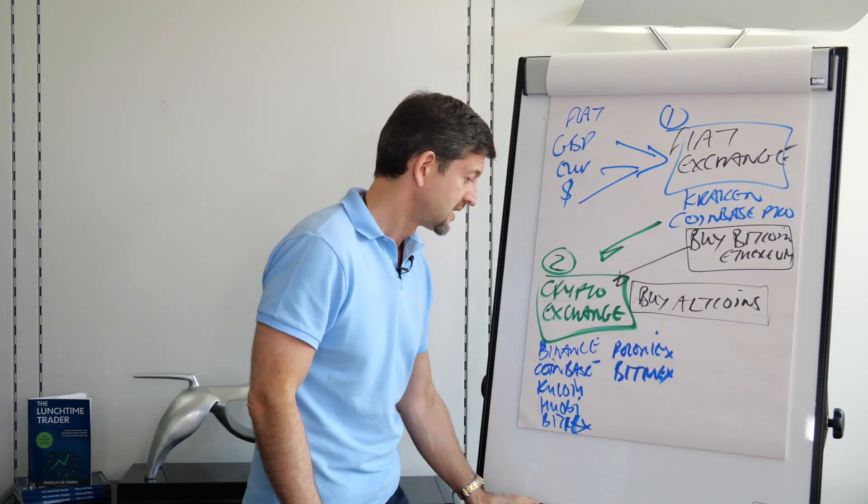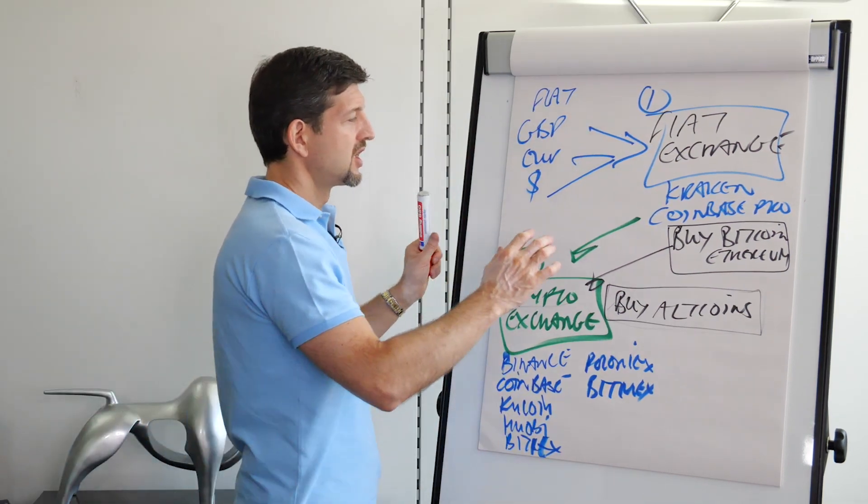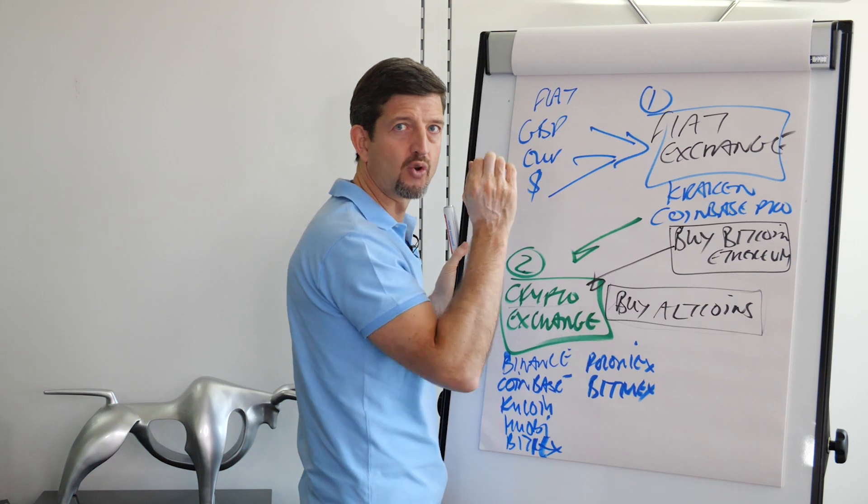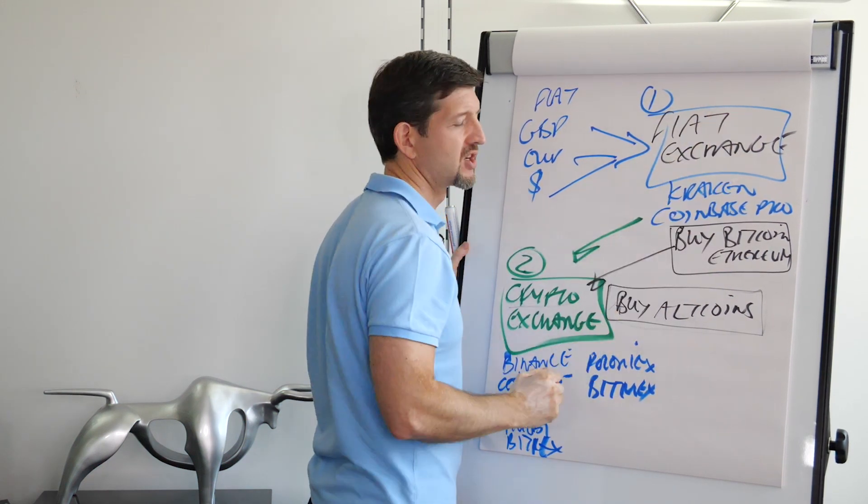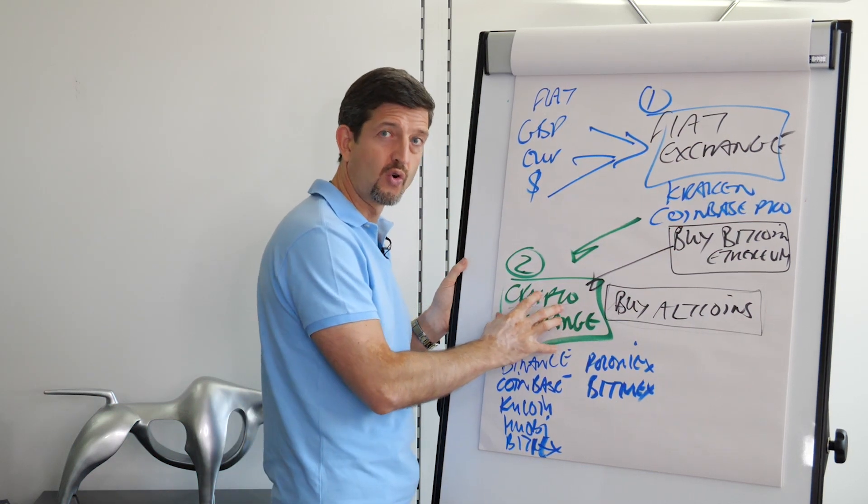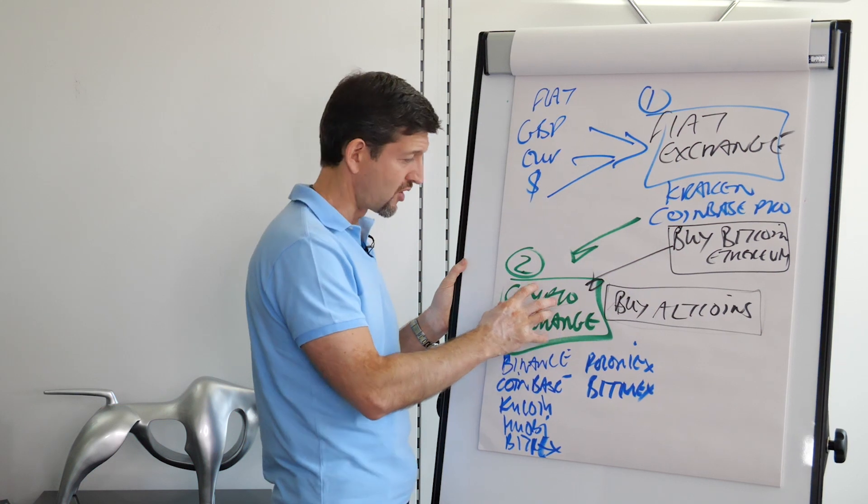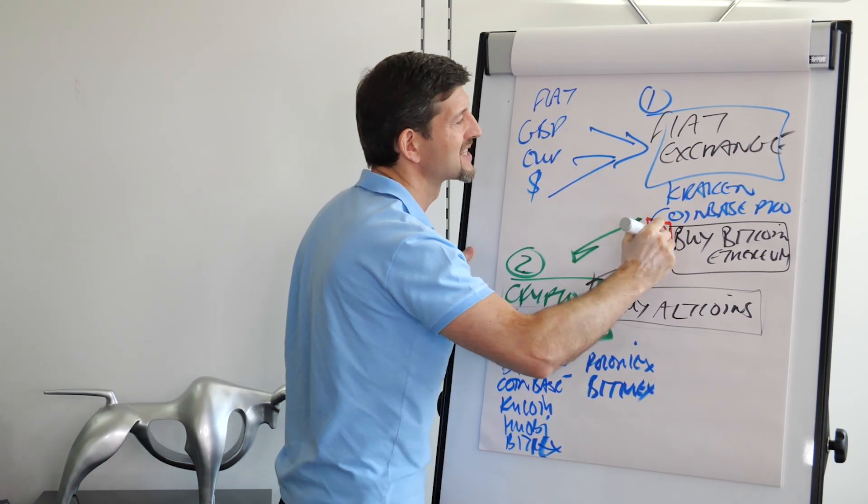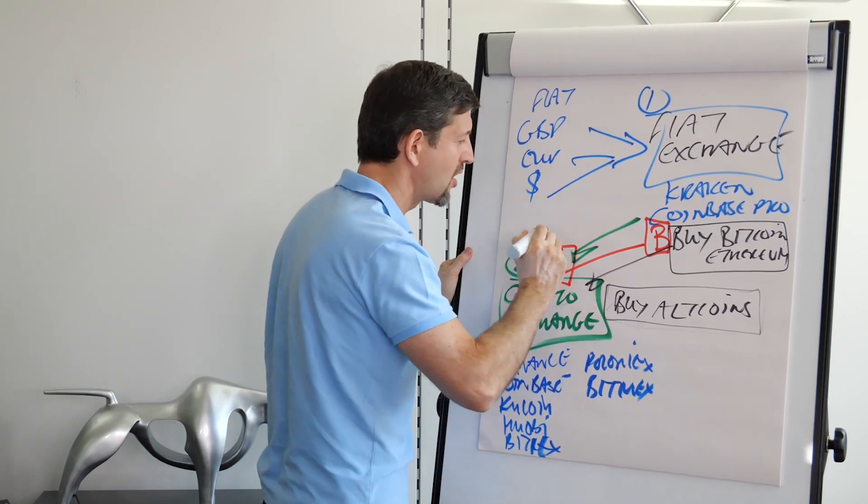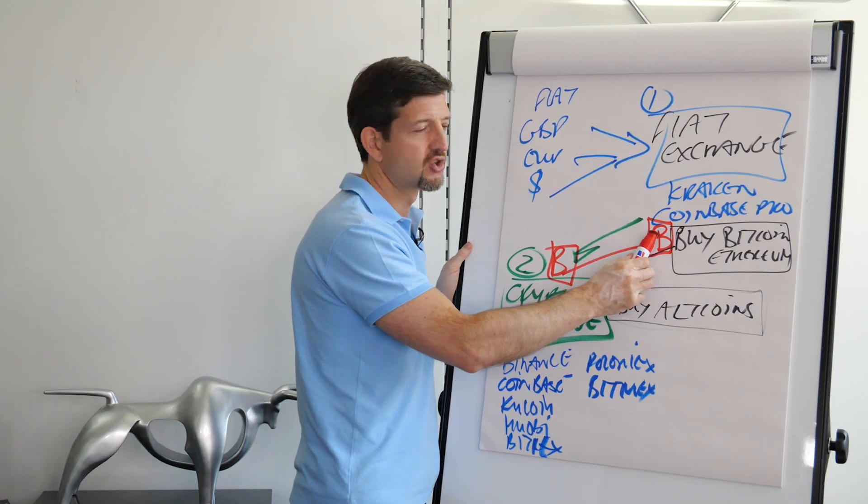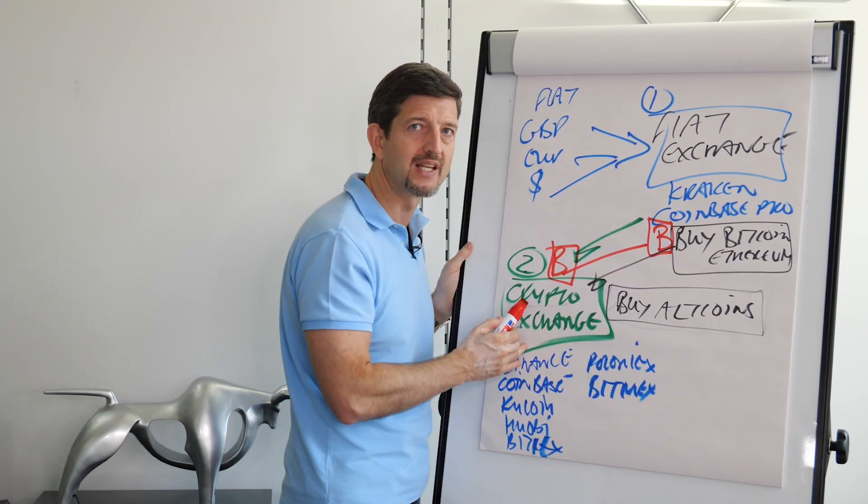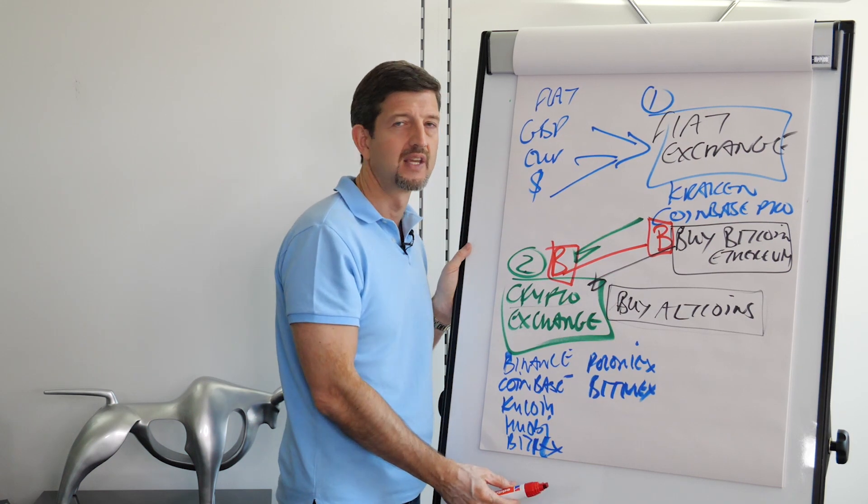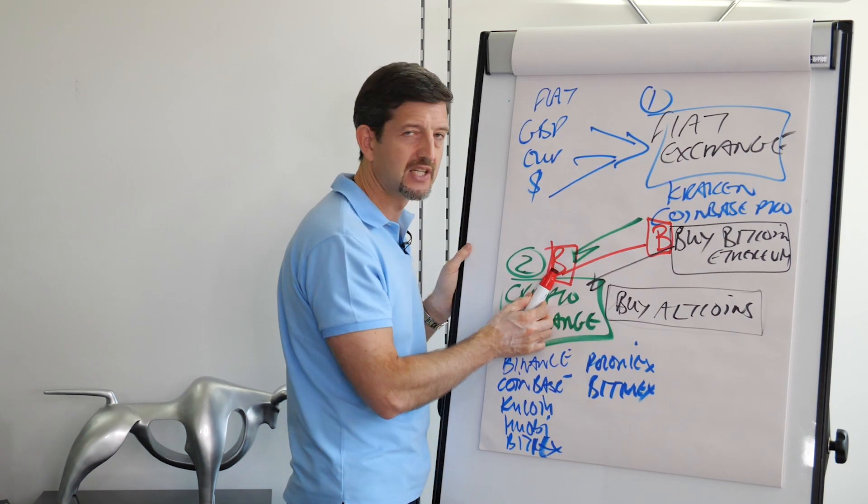Now I'm going to give you a golden nugget here. You are going to have on your fiat exchange an address for your Bitcoin - your Bitcoin address on your fiat exchange. On your crypto exchange you're also going to have a Bitcoin address. Bitcoin from your Bitcoin wallet or address on here has to go to a Bitcoin wallet on here. You cannot transfer Bitcoin to an Ethereum wallet - it'll be gone. You can't transfer Bitcoin to a Dash or Monero or any of the other thousands of coins. It's got to be Bitcoin wallet to Bitcoin wallet.